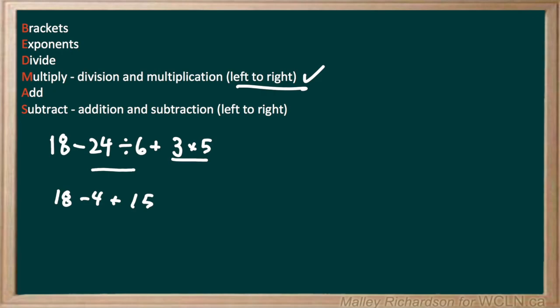Now we're left with addition and subtraction, which we do from left to right again. 18 minus 4 gives us 14, plus 15, and we're left with a final answer of 29.